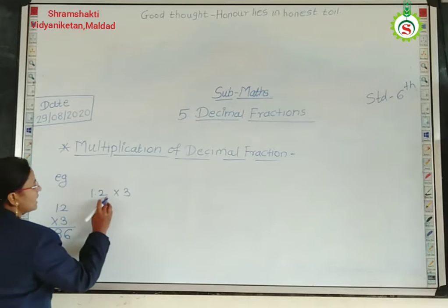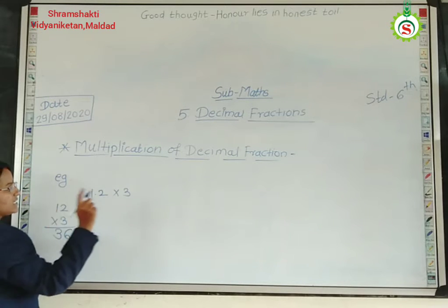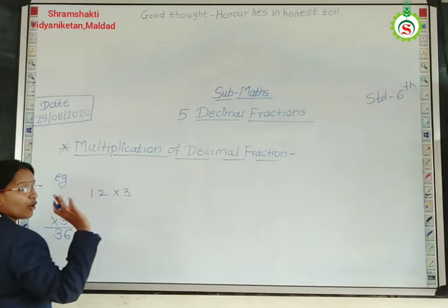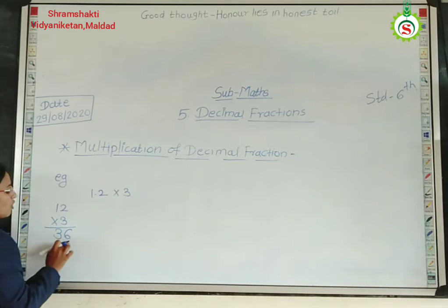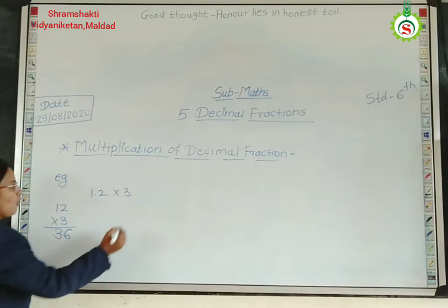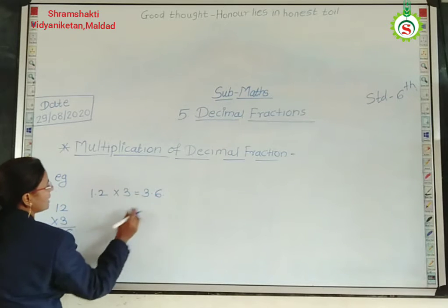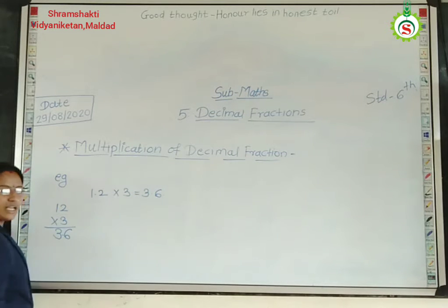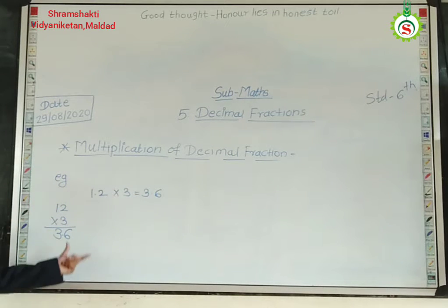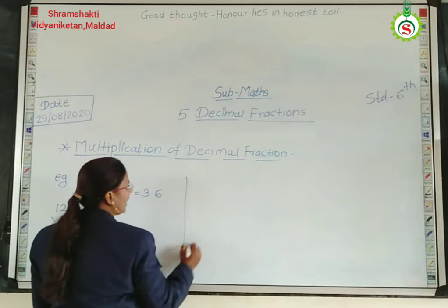Now see here — how many digits after the point? Only one digit. Here, no point. So leave only one place. So the answer is 3.6. Understood, student? Let's take one more example.